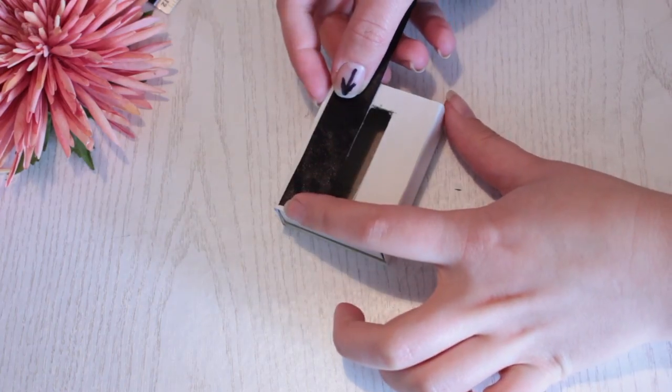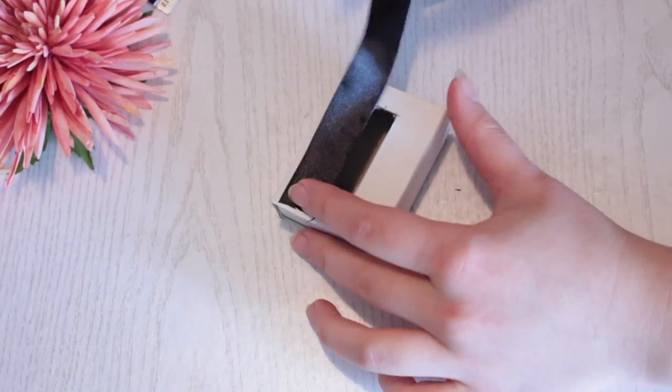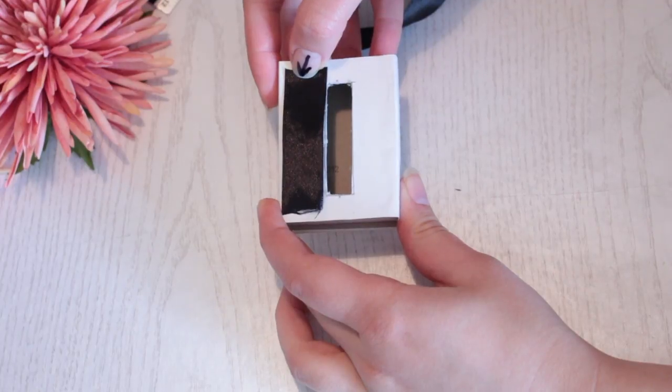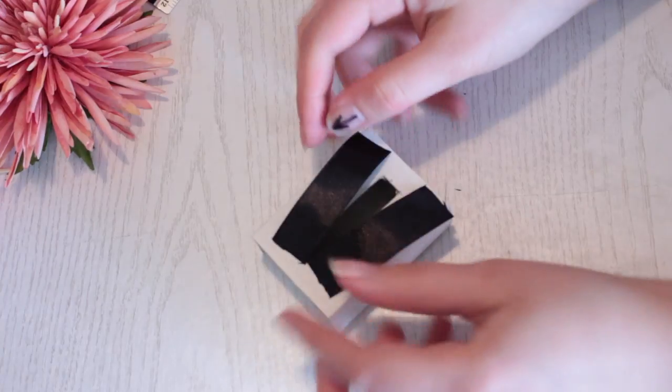Now take some ribbon and measure it out according to the hole. But make it slightly bigger, but not as big as the matchbox. And then cut a piece off. Now take this piece and use it as a stencil for the next piece of ribbon.